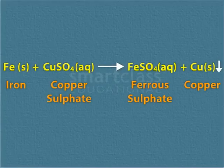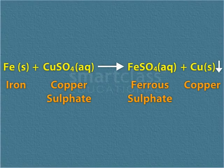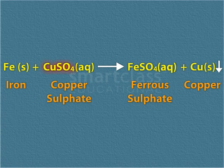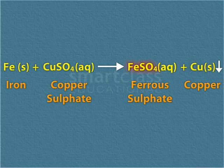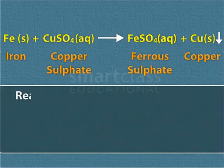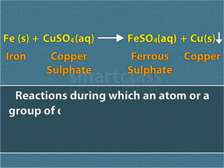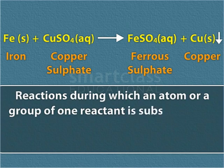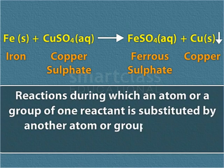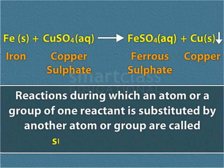Thus, you have seen that a chemical reaction takes place between iron and a copper sulfate solution. During the reaction, ferrous ions substitute copper ions from the copper sulfate solution, resulting in the formation of copper metal and ferrous sulfate solution. Such reactions during which an atom or a group of one reactant is substituted by another atom or group are called substitution reactions.